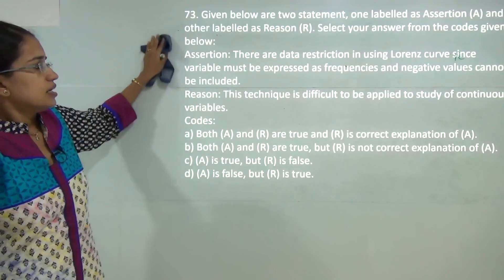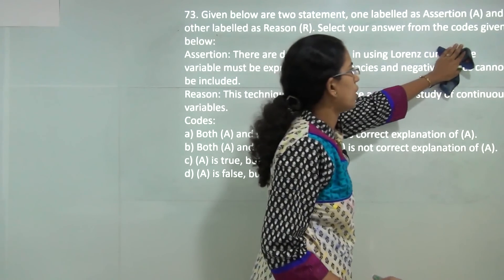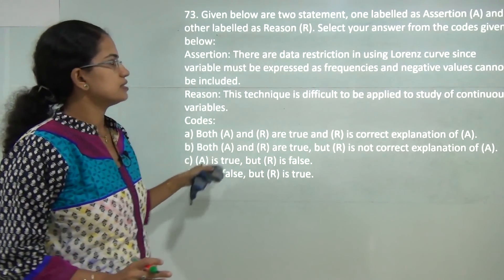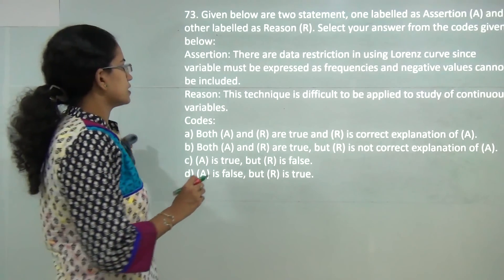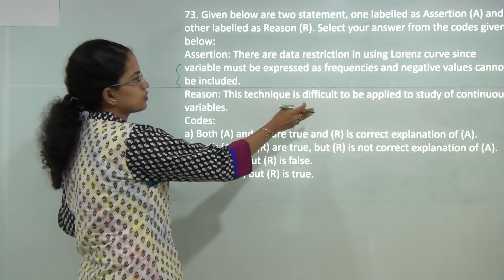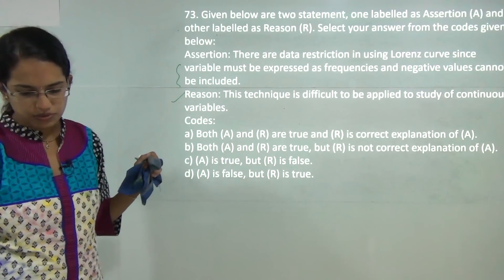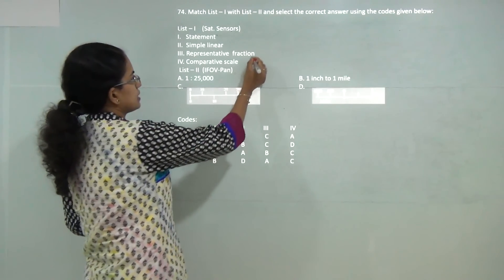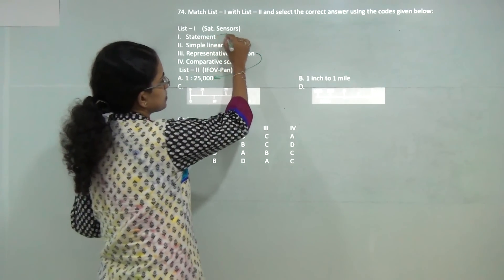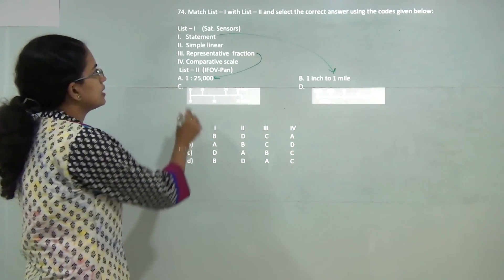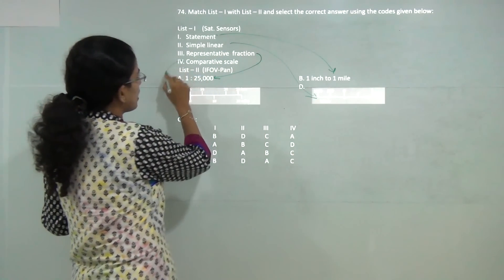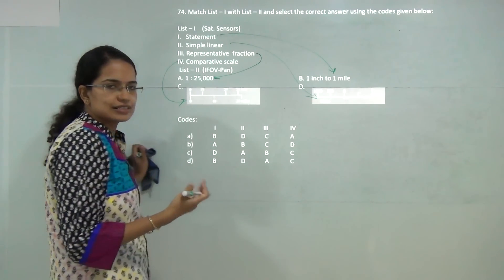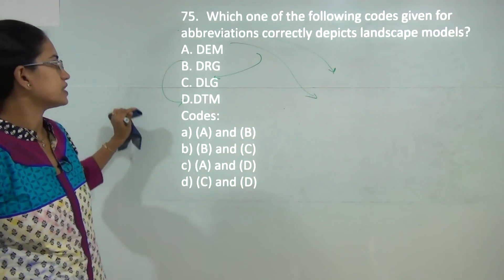This is on the disadvantages of Lorenz curve. One of the basic disadvantages is that there are data restrictions, since variables are expressed as frequency and negative values cannot be included, and it is difficult to apply to study of continuous variables. Both of these are correct. Next question: representative fraction is written as 1:25000, statement scale is represented as 1 inch to 1 mile, simple linear scale is this, and then you have comparative scale where you have miles and kilometers both values given. If you are doing your practicals nicely even in your bachelor's, you can answer this question.